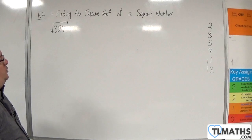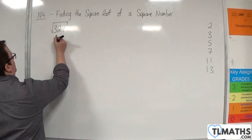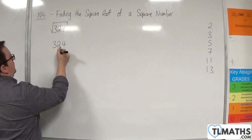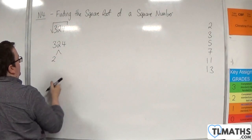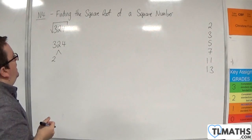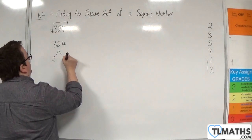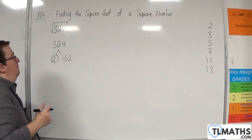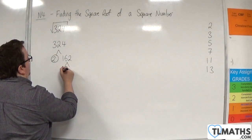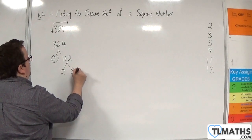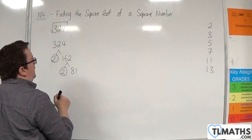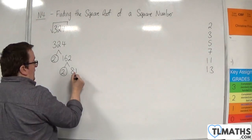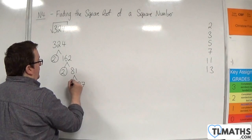So 324 — is it divisible by 2? Yes, that would be 162. Now 162 is not prime. 2 goes into 162 and that would be 81 times. Now 2 doesn't go into 81, but 3 goes into 81, 27 times.